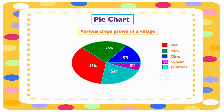Now let's find out which crop the village grew more. Looking at the pie chart, it is rice because it is 35 percent. And which one is the least crop they grow? According to the chart, it is wheat because it has only five percent.